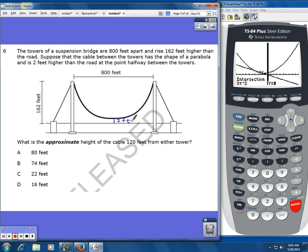What is the approximate height of the cable 120 feet from either tower? So what we're looking for right here is the equation of the parabola. And then we're going to use that equation to solve for the distance.